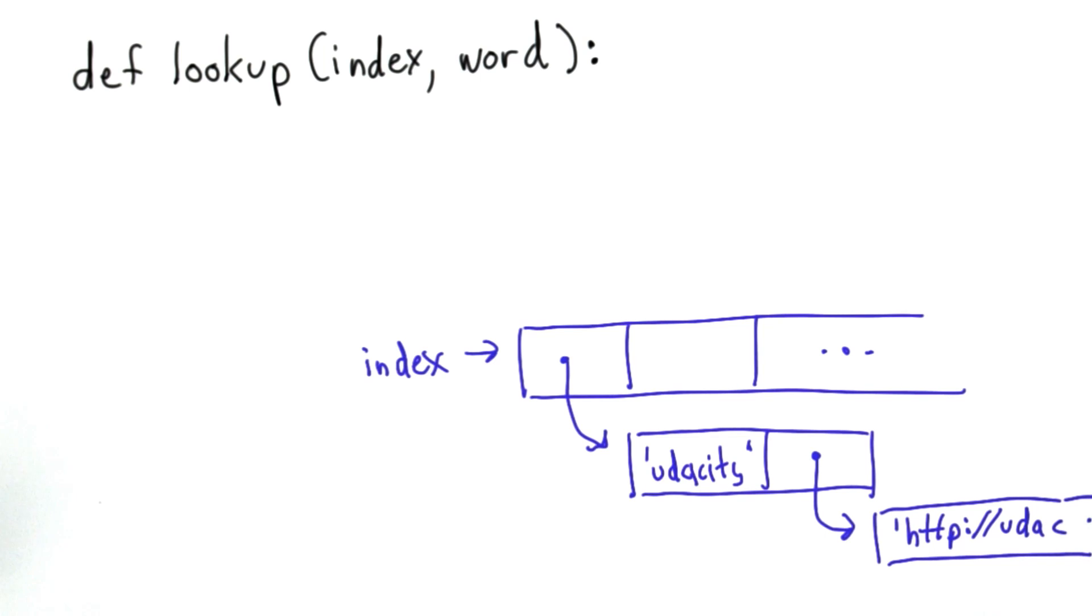So what we want to do to define lookup is very similar to what we did for add_to_index. We want to go through the entries in the index to try to find one that matches the keyword.